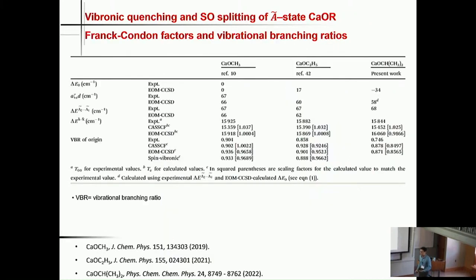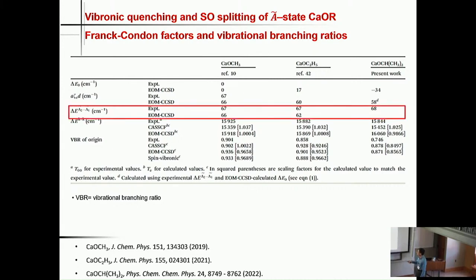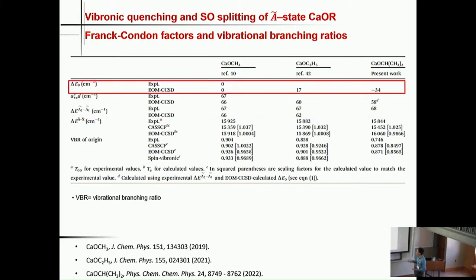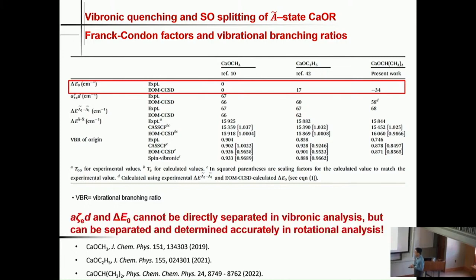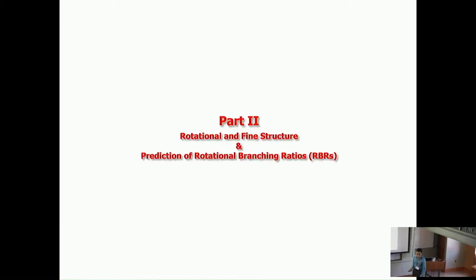After calcium methoxide, we move on to calcium ethoxide and isopropoxide. We found that the overall A1-A2 separation is almost the same for all three molecules, but the calculation shows that delta E naught is quite different for these three molecules. Unfortunately, if you only have vibronic resolution, you cannot separate delta E naught and A·zeta_E·D because both of them split the A1-A2 levels. But if you have rotational and fine structure resolved, you can separate and determine these two contributions separately, as will be explained in part two of this talk.